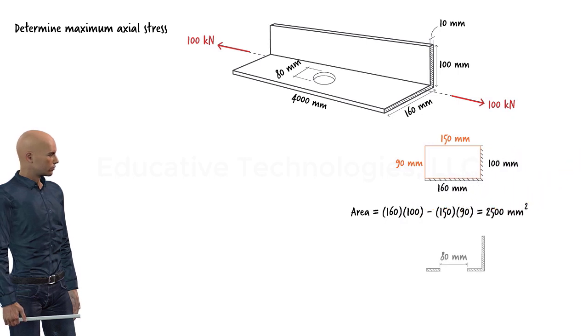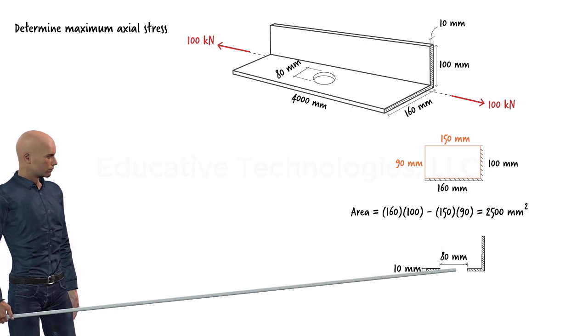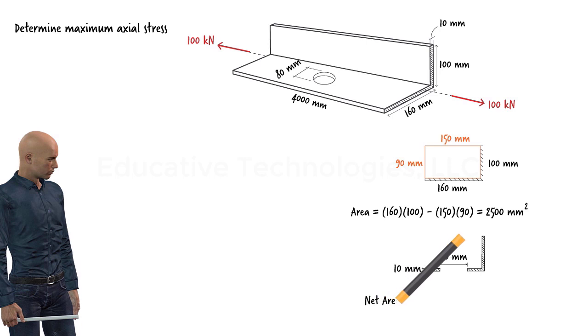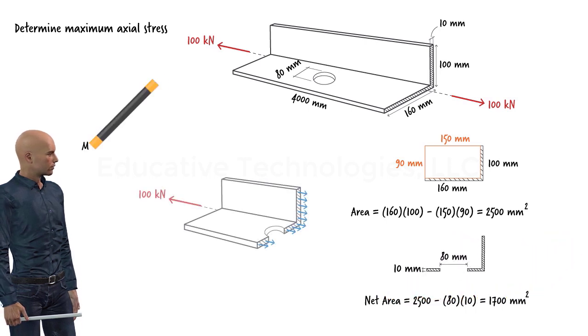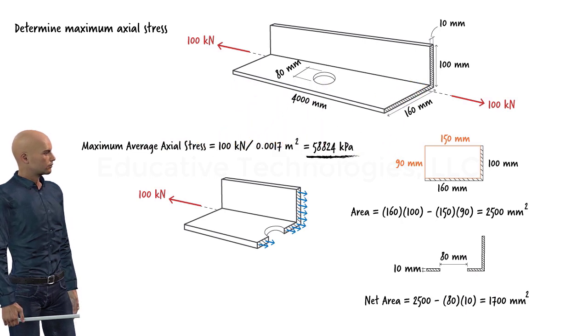The area due to the hole that needs to be subtracted from the gross area is the area of a rectangle with dimensions 10 millimeters by 80 millimeters. We can compute the net area by subtracting the area of the hole from the gross area. Now we can calculate the maximum average normal stress in the member as shown here.